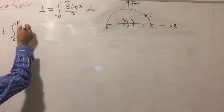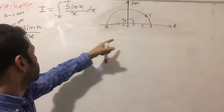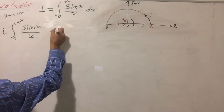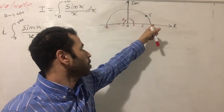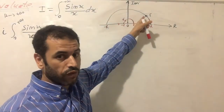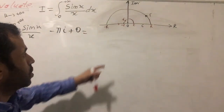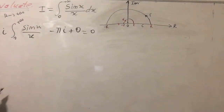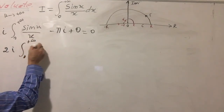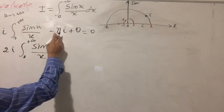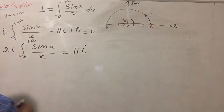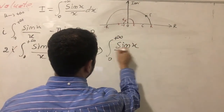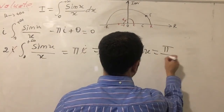Now I plug everything into the expression to evaluate our integral of sine x over x. As epsilon goes to 0, the small gamma integral gave minus pi i. By Jordan's lemma, the large gamma integral equals 0. By the Cauchy theorem, the sum of all integrals equals 0. So we have 2i times the integral from 0 to plus infinity of sine x over x dx plus (minus pi i) plus 0 equals 0. The i cancels, giving the integral from 0 to plus infinity of sine x over x dx equal to pi over 2.